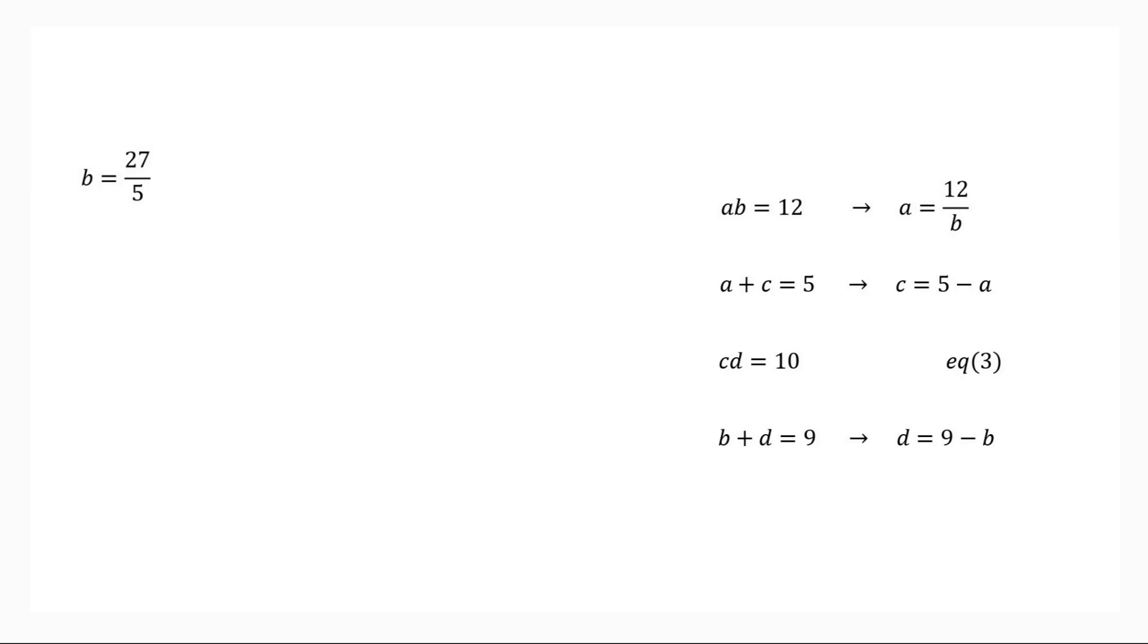When B equals 27 over 5, then A equals 12 over 27 over 5 which is equal to 20 over 9. C equals 5 minus 20 over 9 which is equal to 25 over 9. D equals 9 minus 27 over 5 which is equal to 18 over 5. This is the second set of solutions.